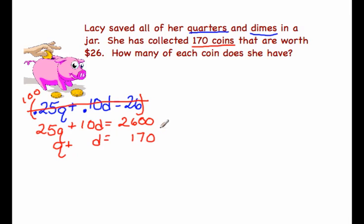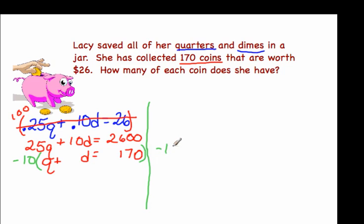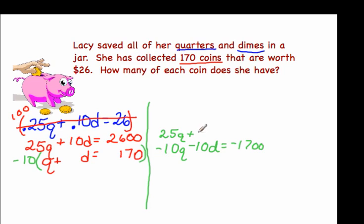From here we can solve our system of equations by using either substitution or elimination. I'm going to use elimination. We multiply the second equation by negative 10 to eliminate the d's, or the dimes. Negative 10 gives us negative 10q minus 10d equals negative 1,700.